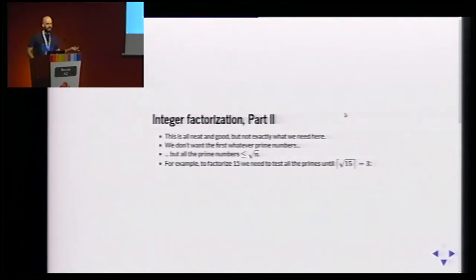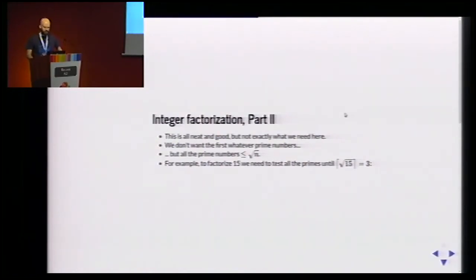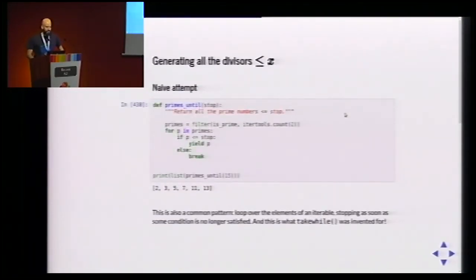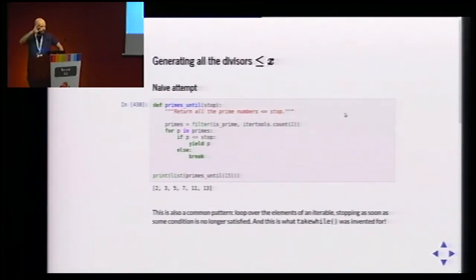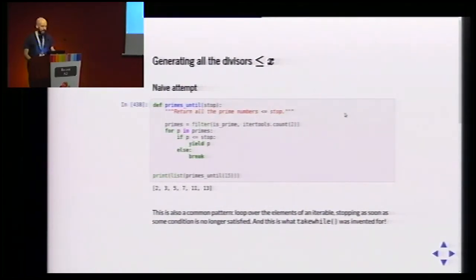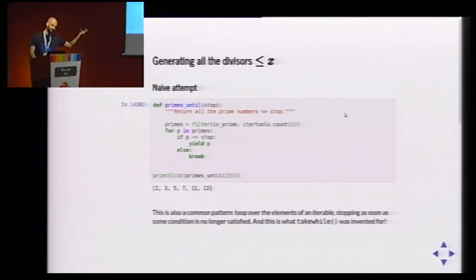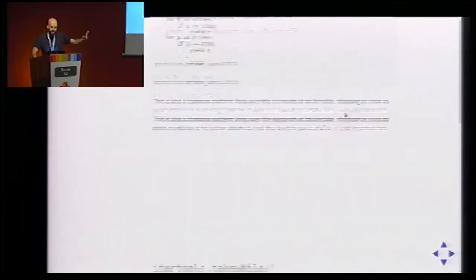After 18 minutes we haven't actually answered the original question, because we don't want the first N prime numbers — we want a series of prime numbers up to the square root. So we have to generate primes up to a threshold value. We don't know how many, we know the maximum value. So we have a primes_until function that loops over the primes and stops when we hit the limit, yielding the prime number if it's less than the threshold.